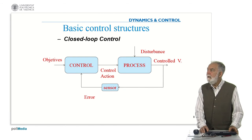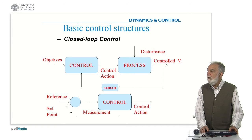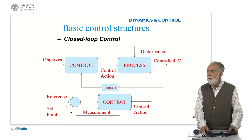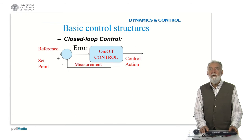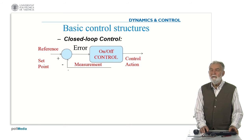In the case of closed loop control, we have a sensor providing information about the control variable, and the control is generated based on the error. So the control is based on the difference between the reference or setpoint and the measurement, and the error is fundamental.